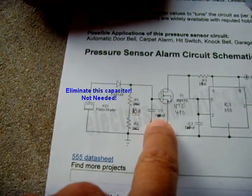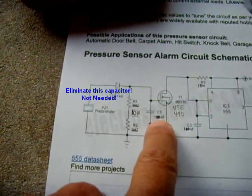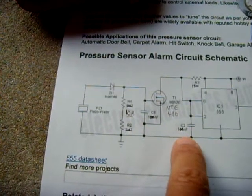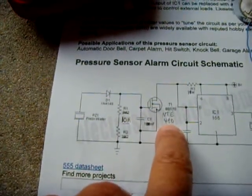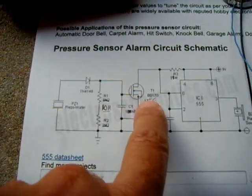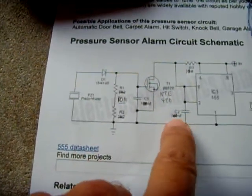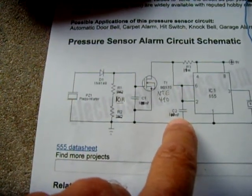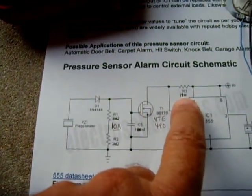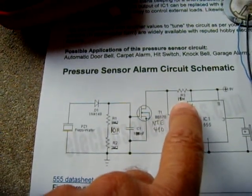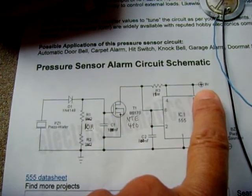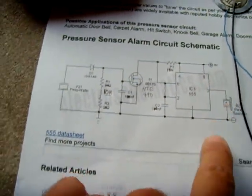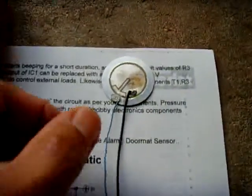Over here I used a 100 nanofarad which is a 0.1 microfarad. This is also an NTE 490, a BS170, or a 2N7000. I made this one a 100 nF which is also a 0.1 microfarad. This was listed as a 1 meg and I made that an 18 meg. Runs fine on 9 volts or 12 volts.